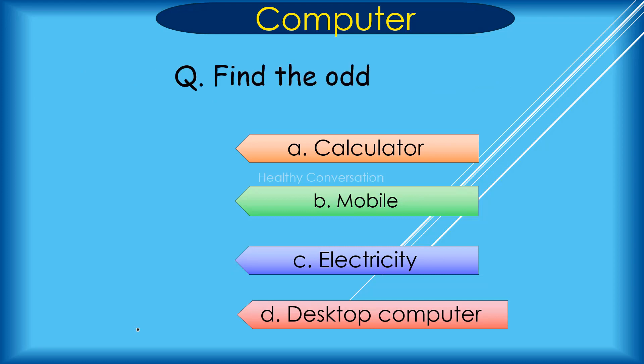Question: Find the odd one out. A. Calculator, B. Mobile, C. Electricity, D. Desktop computer. Correct answer is C. Electricity.